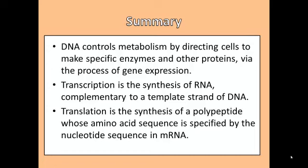Let's summarize Chapter 17, From Gene to Protein. DNA controls metabolism by directing cells to make specific enzymes and other proteins via the process of gene expression. Transcription is the synthesis of RNA complementary to a template strand of DNA. Translation is the synthesis of a polypeptide whose amino acid sequence is specified by the nucleotide sequence in mRNA.